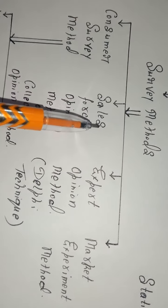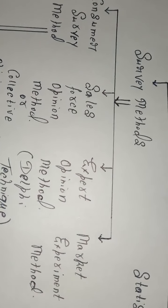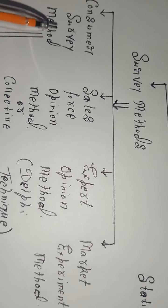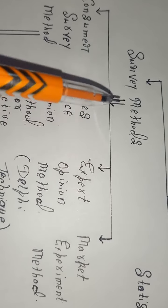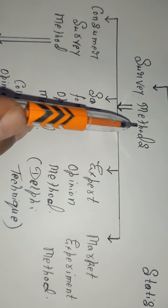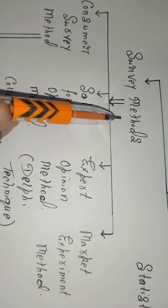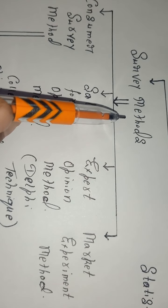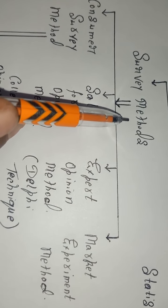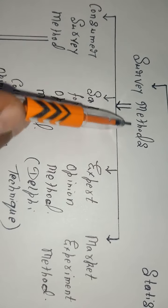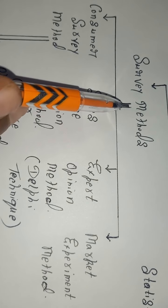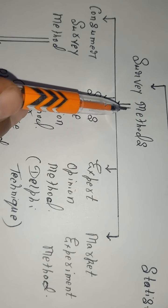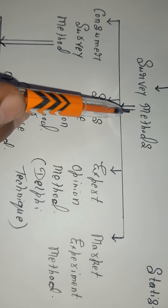Let us come to the first one — the survey method. Today we will focus on survey methods only. Survey method means a particular set of questions is prepared by the marketer, and on the basis of those questions, a survey is conducted. Different solutions to different problems are searched, and on the basis of this survey, the demand is forecasted for a future period of time.